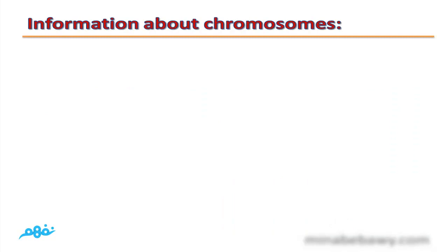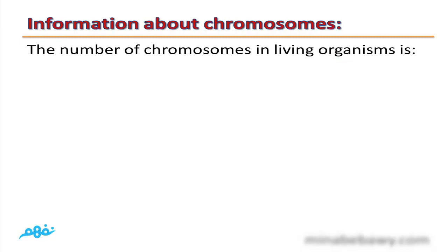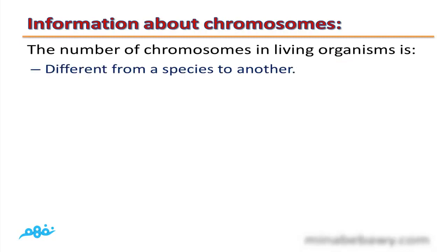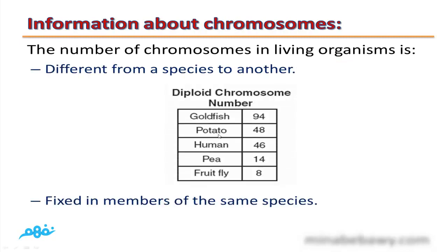Information about chromosomes: the number of chromosomes in living organisms differs from one species to another. For example, in potato it contains 48 chromosomes, in humans it contains 46 chromosomes, in a certain plant it contains only 14 chromosomes, and so on. The number of chromosomes is fixed in members of the same species.